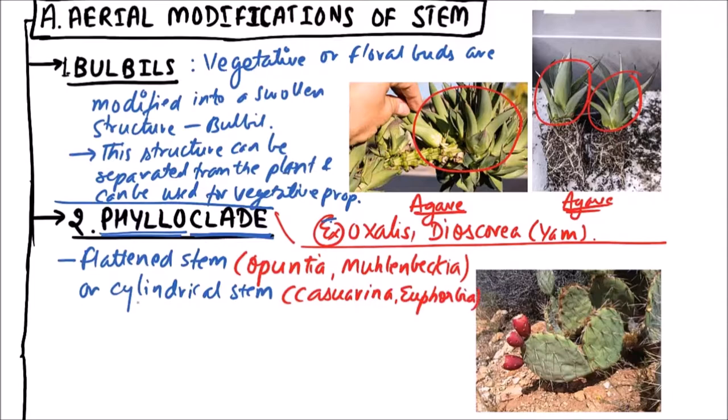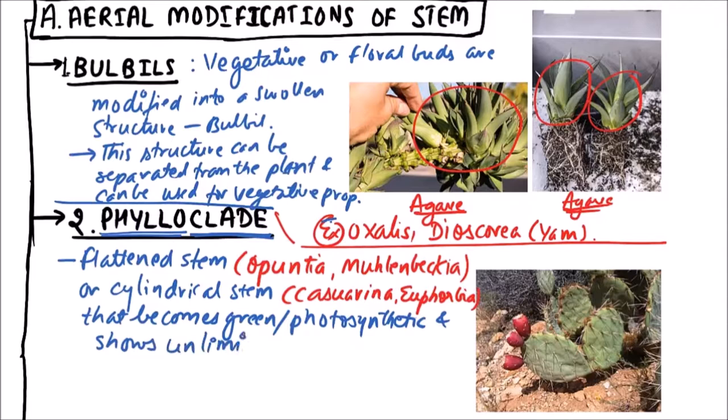So flattened stem or cylindrical stem that becomes green or photosynthetic and shows unlimited growth.